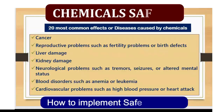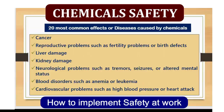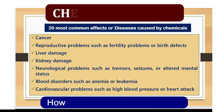Number 6: cancer. Number 7: reproductive problems such as fertility problems or birth defects. Number 8: liver damage. Number 9: kidney damage. Number 10: neurological problems such as tremors, seizures, or altered mental status. Number 11: blood disorders such as anemia or leukemia.